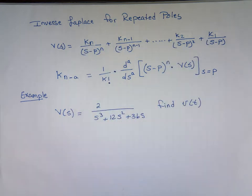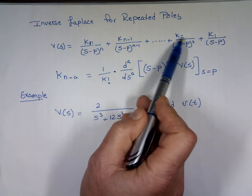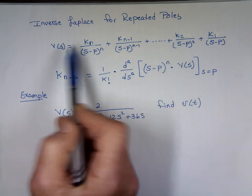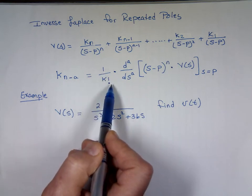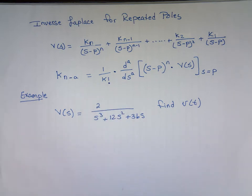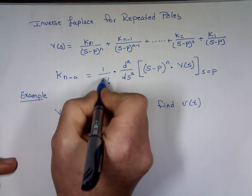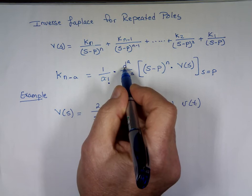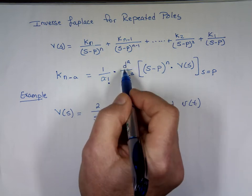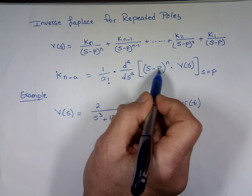To find each one of these k's — k_{n-a}, any one of them — where a is 0 for the first, a is 1 for the next, and so on up to n. It's going to be 1 over a factorial times the a-th derivative — not the first, not the second, but the a-th derivative — of the expression (s minus p) to the n times V(s).